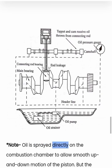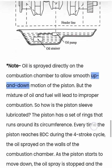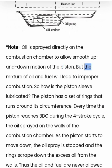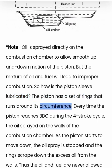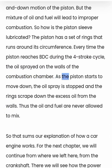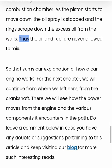Oil is sprayed directly on the combustion chamber to allow smooth up and down motion of the piston. But the mixture of oil and fuel will lead to improper combustion. The piston has a set of rings that runs around its circumference. Every time the piston reaches BDC during the four-stroke cycle, the oil is sprayed on the walls of the combustion chamber. As the piston starts to move down, the oil spray is stopped and the rings scrape down the excess oil from the walls. Thus the oil and fuel are never allowed to mix.